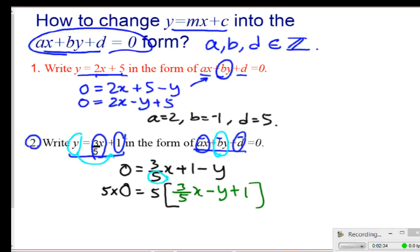So now, 5 times 0 gives you 0, and 5 times 3/5, 5 and 5 cancel, that is left with 3x - 5y + 5, that is multiplying through. Here I give you -5y, and then 5 times 1 gives me 5. So I'm basically done. In this case, a = 3, b = -5, and d = 5.